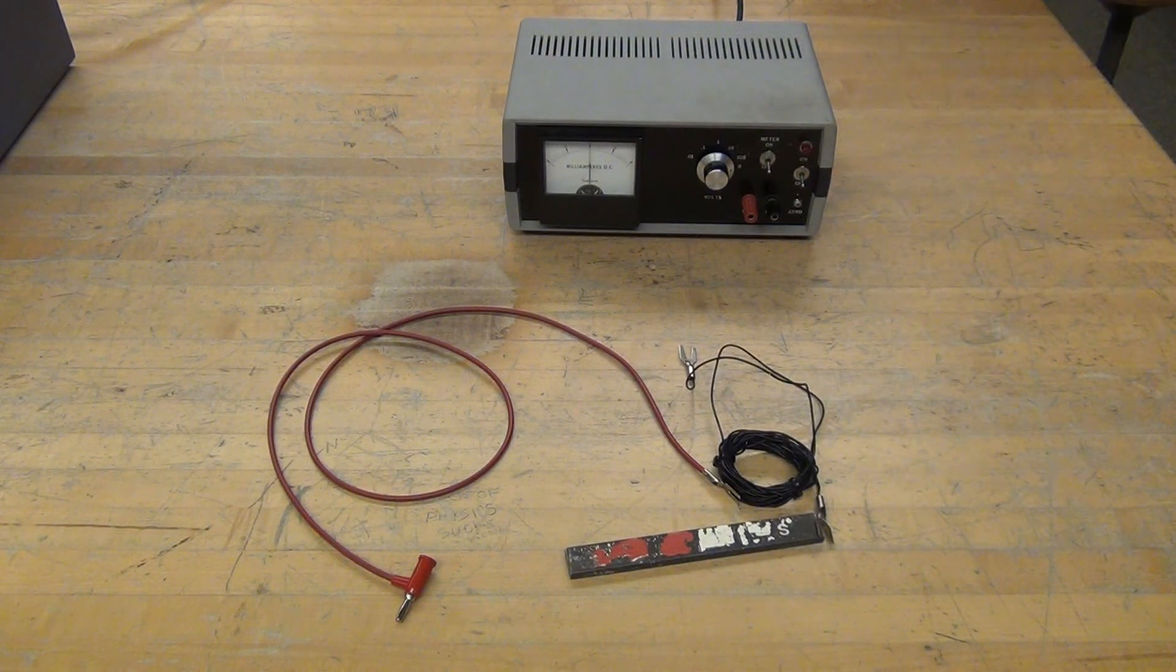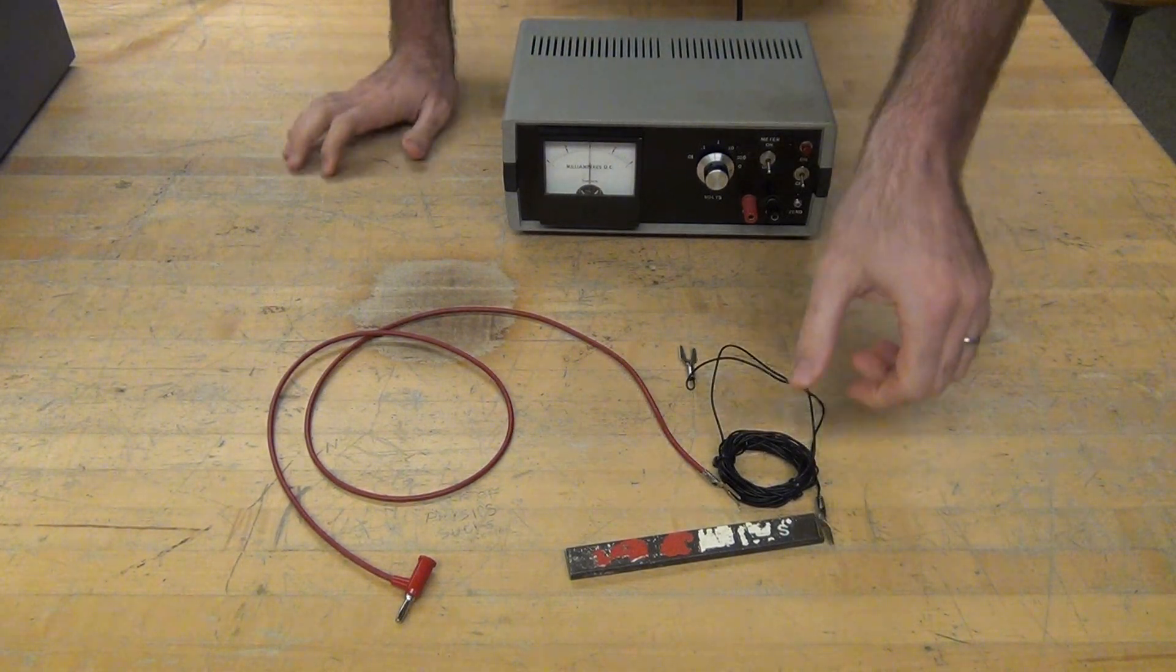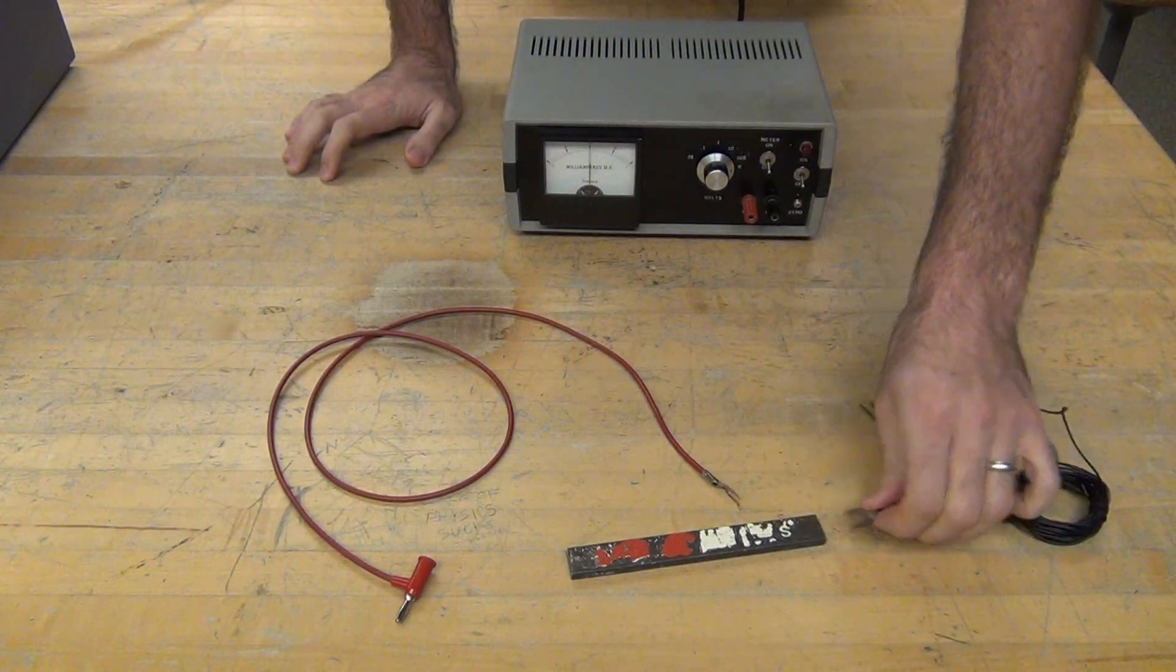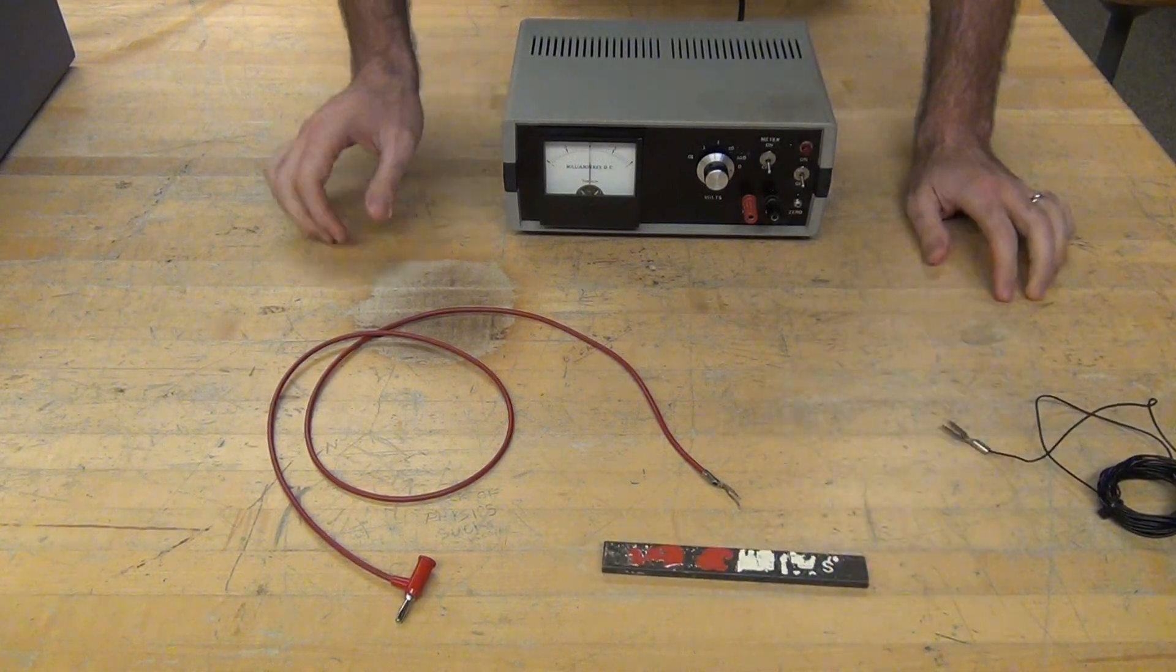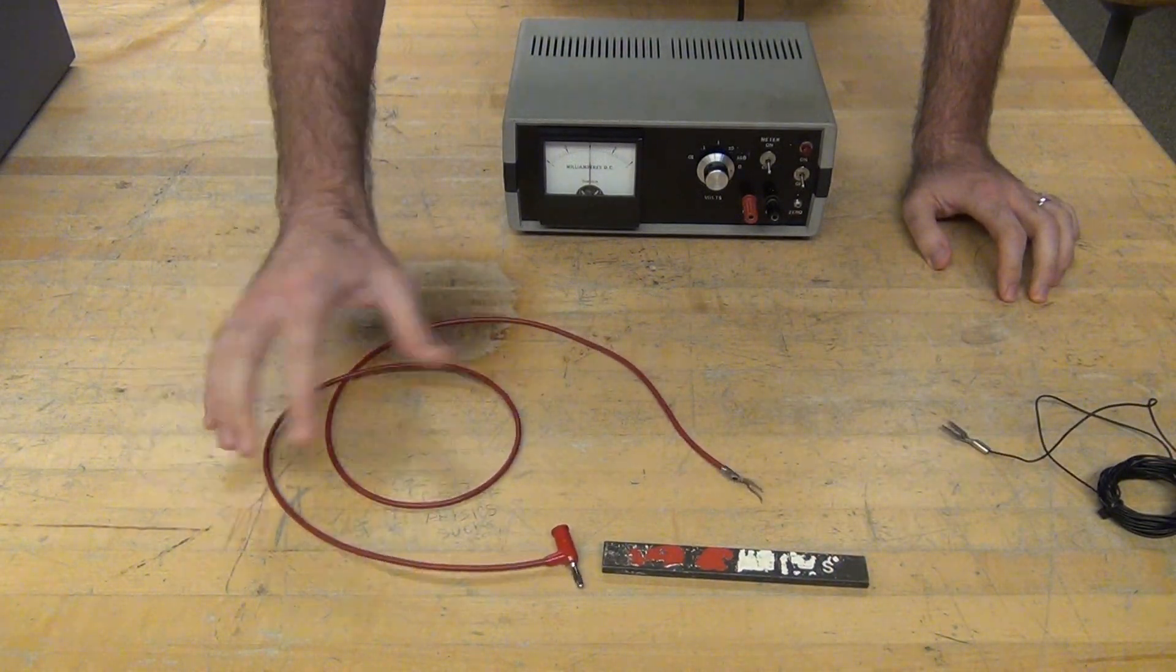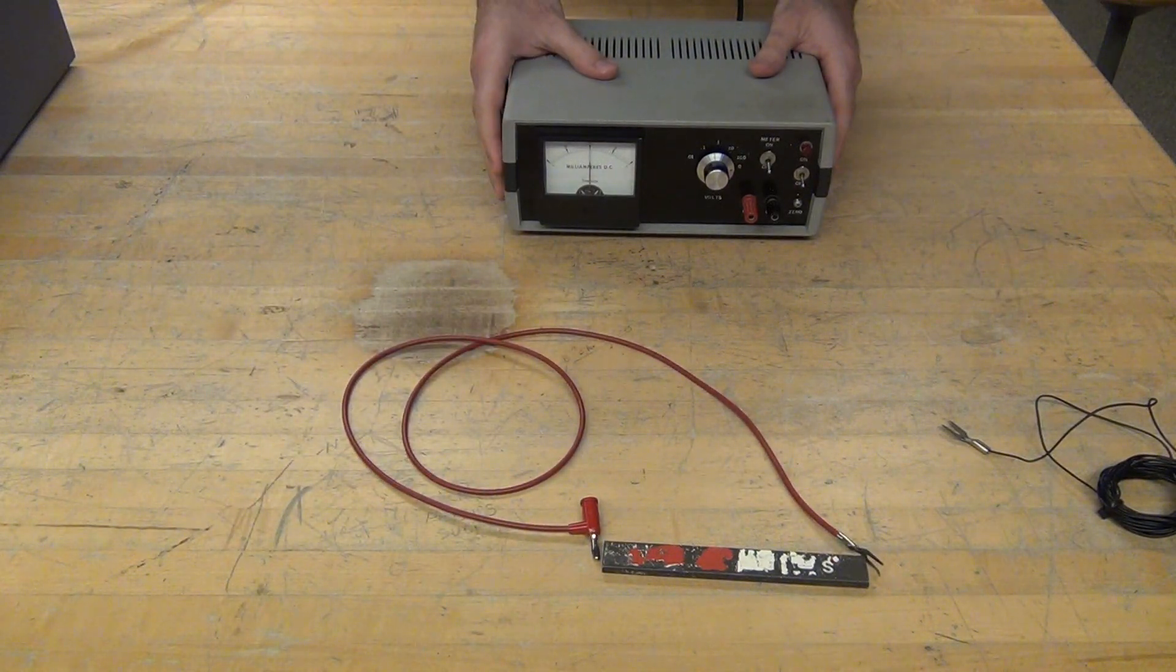We're going to look at currents and voltages that we induce with a changing magnetic field. So we've got a long wire that we'll use in just a little bit, we've got a magnet, we've got an unwound wire that's loose, and we have a very sensitive meter.